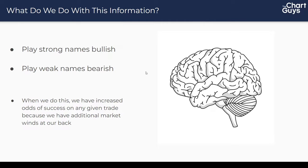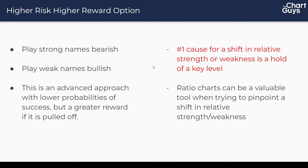That's the standard, easy way to utilize this information — it increases odds of success and is straightforward. But it's not the only way. If you're a bit more of a degen, there's the high-risk, higher-reward option: the opposite — playing the strong names bearish and the weak names bullish. This is an advanced approach with lower probabilities of success but greater reward if pulled off. If you're new to using correlations, you don't necessarily want to try to wrangle these types of trades right out of the gate — essentially you're swimming against the current.